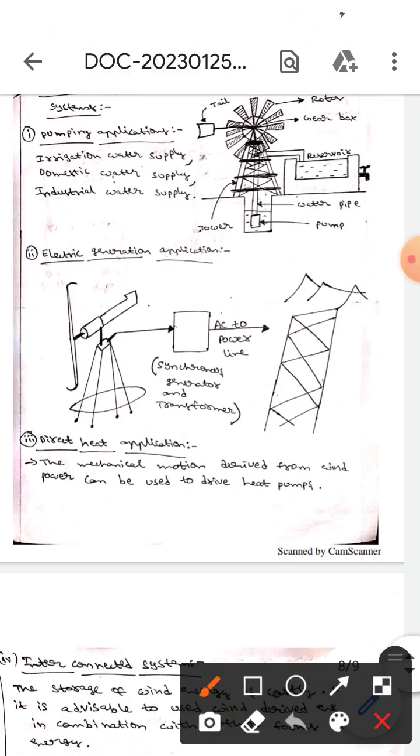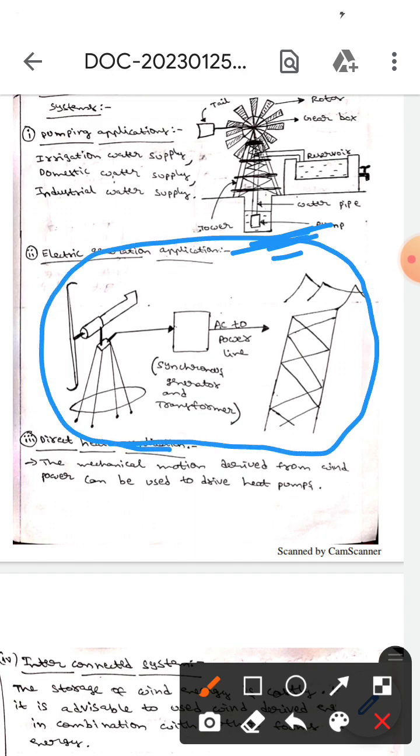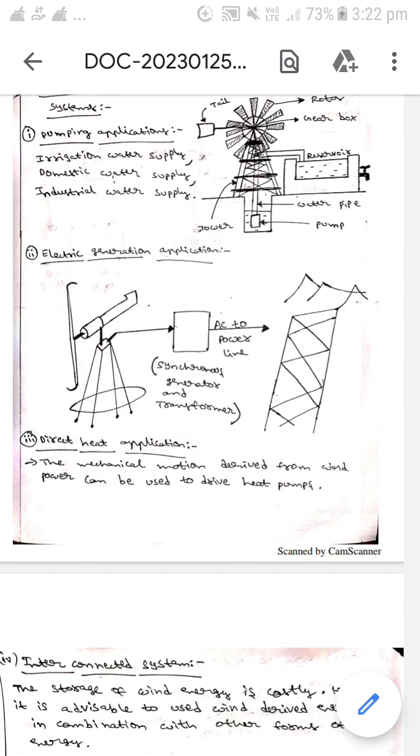The next one is electricity, electric generator application. Here this diagram represents the electric generator, generation application through windmill.